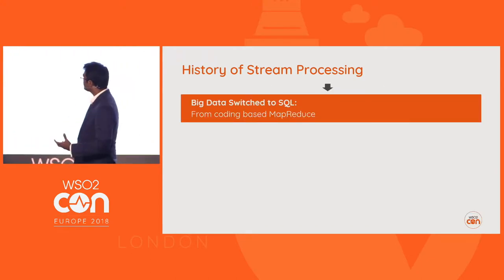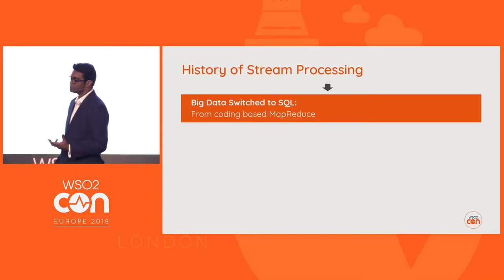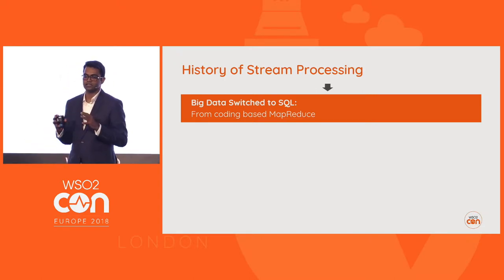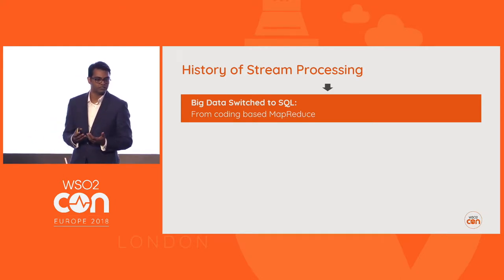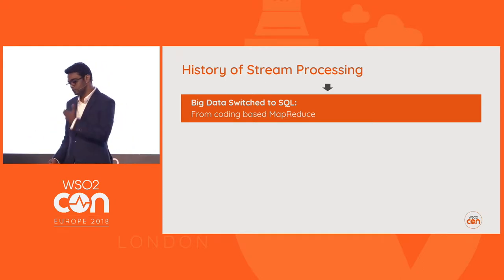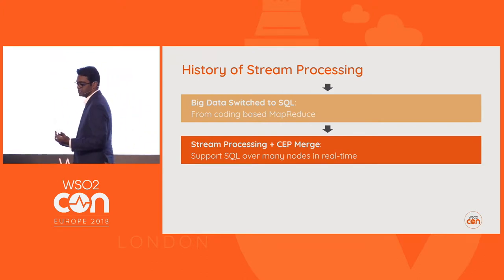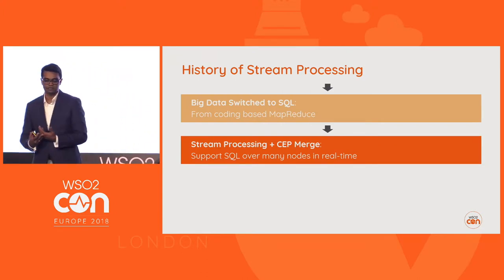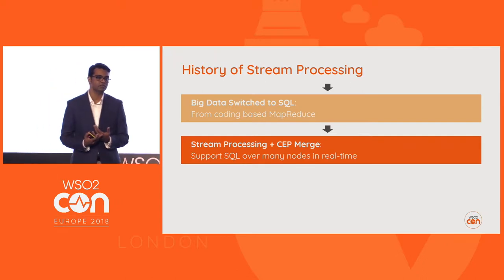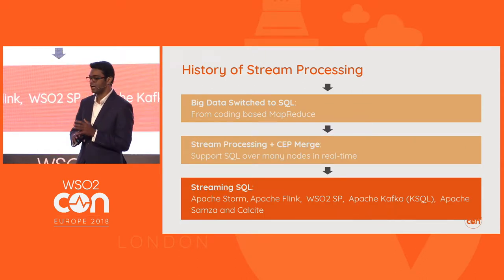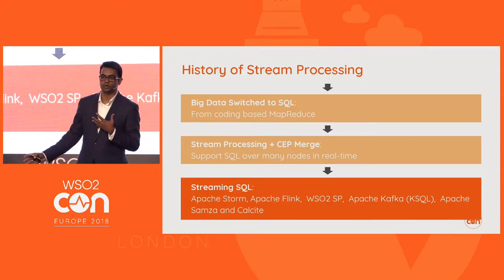The big data world then moved to SQL — HiveQL, Spark query language which is SQL-like. Real-time processing followed the same path. At that point, traditional streaming and the CEP market kind of merged, and we're now in a world where streaming SQL handles all of this.